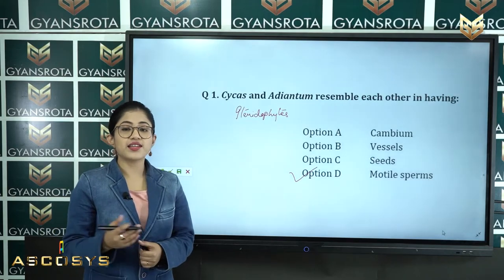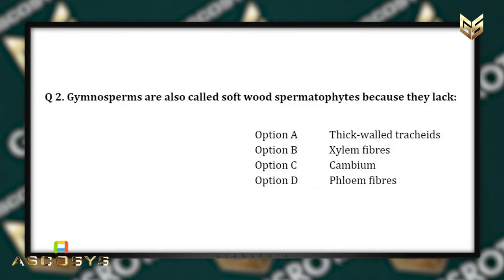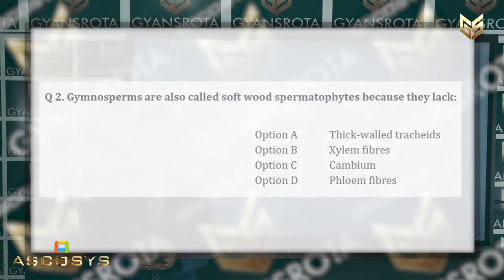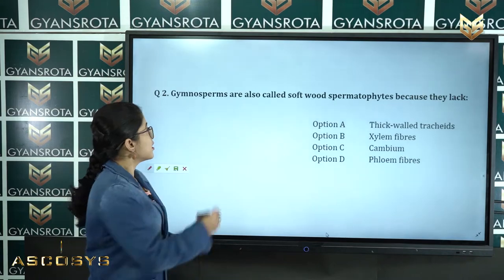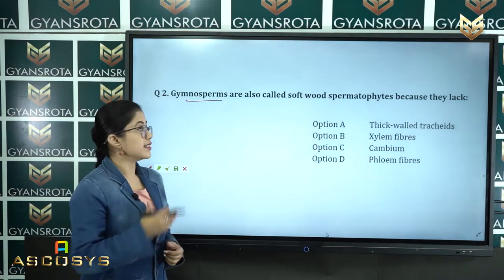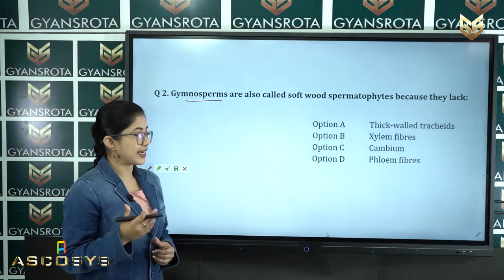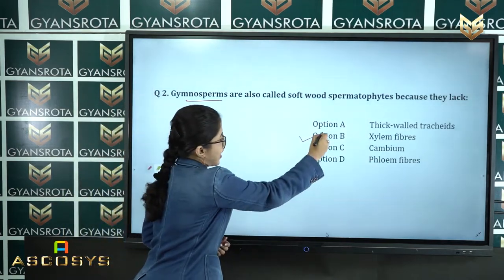Question number 2: Gymnosperms are also called soft wood spermatophytes because they lack — option A thick-walled tracheids, option B xylem fibers, option C cambium, option D phloem fibers. Gymnosperms do not have xylem fibers, and because of this they are called soft wood spermatophytes. Option B is the correct answer.